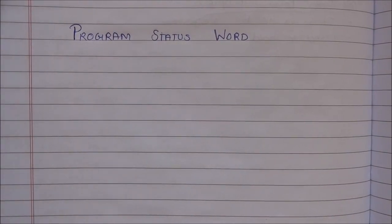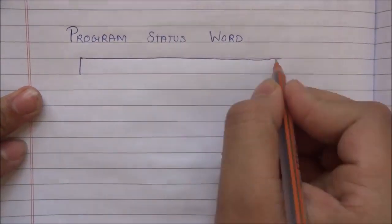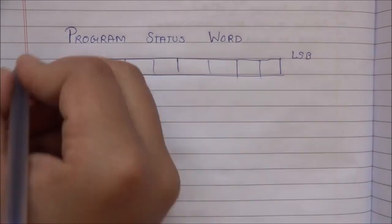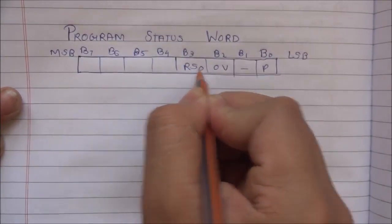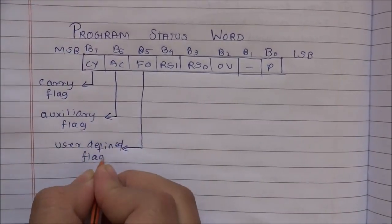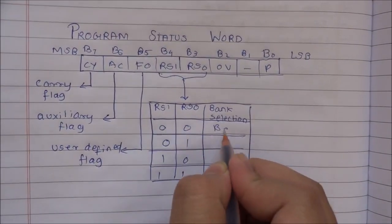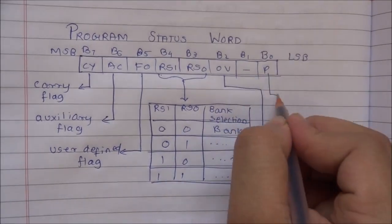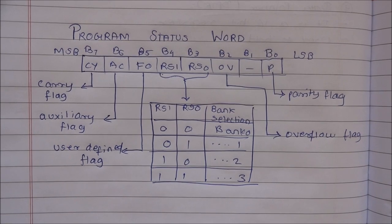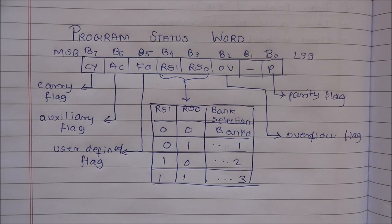In this video we will be seeing the Program Status Word — what does it actually mean. First I will draw the block diagram of the Program Status Word. This is the diagram of the Program Status Word. There are some instructions which affect the status flags, and these status flags are grouped together so they can perform their work. This group of status flags is called the Program Status Word.